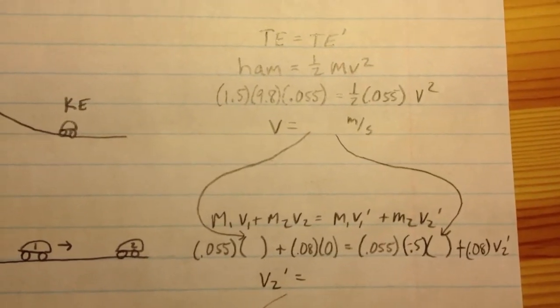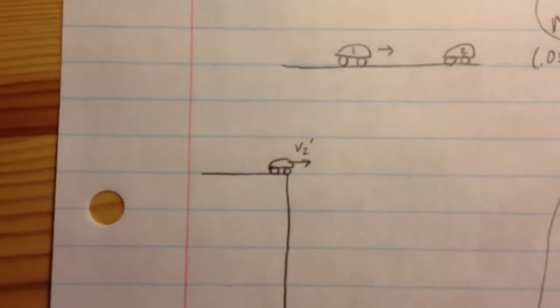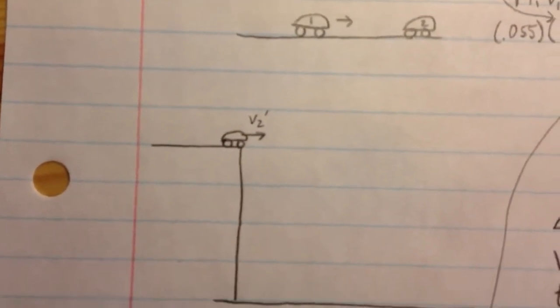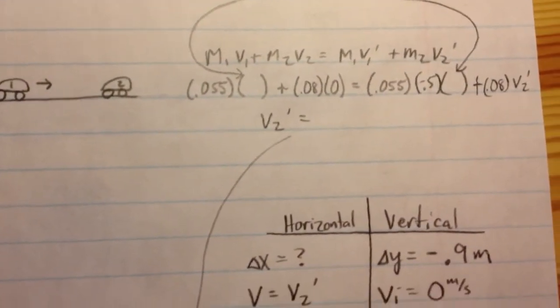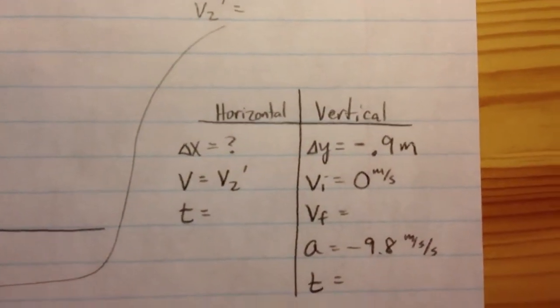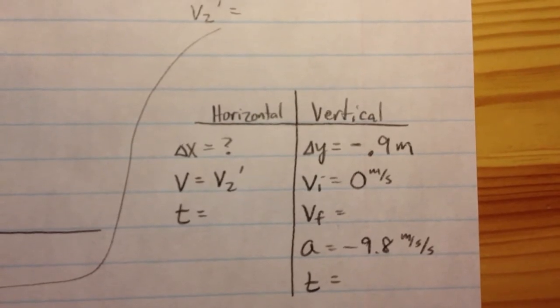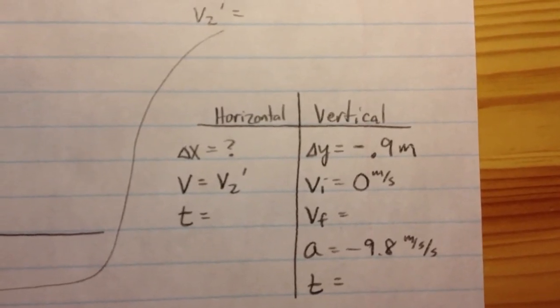Once you have the speed of car 2, that will take you to the final part of your experiment. And that's where car 2 becomes a projectile and lands on the ground. So you take that speed and you use it in your projectile chart as the horizontal speed of the projectile.